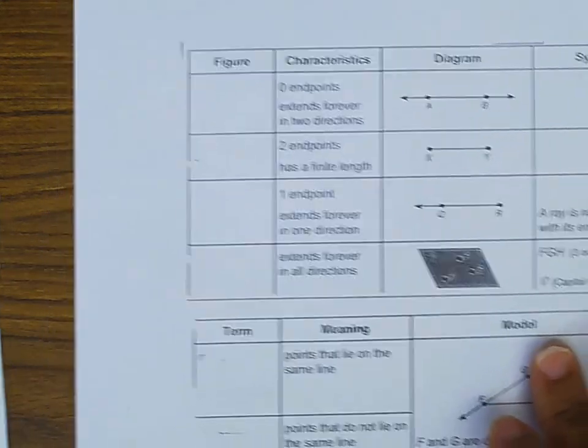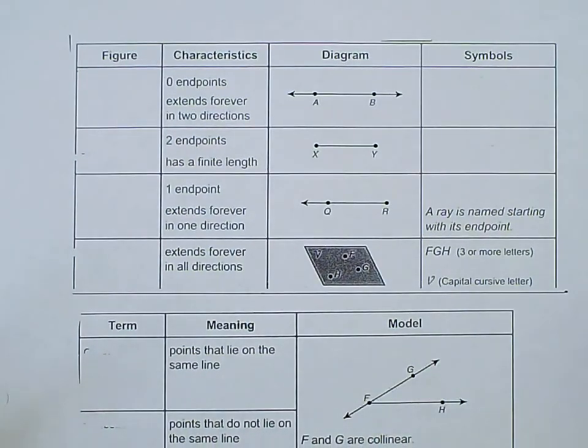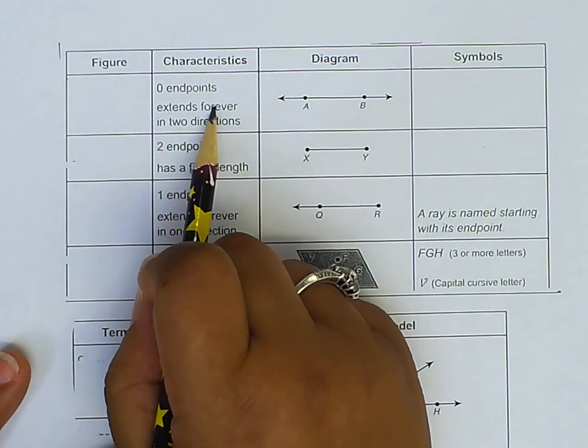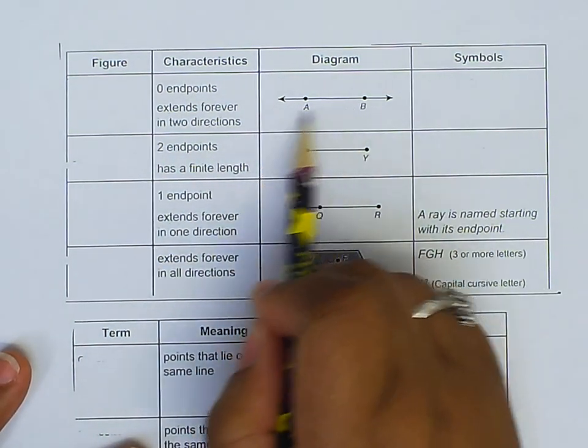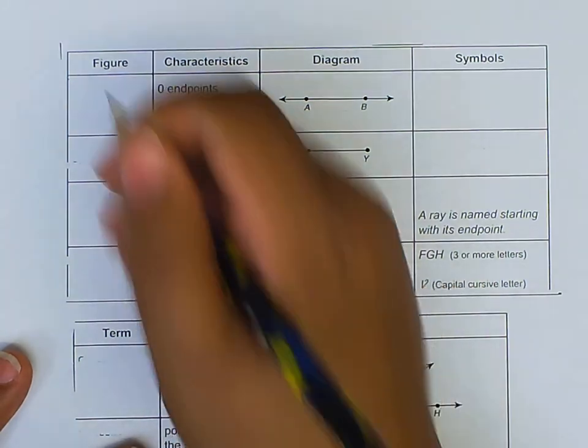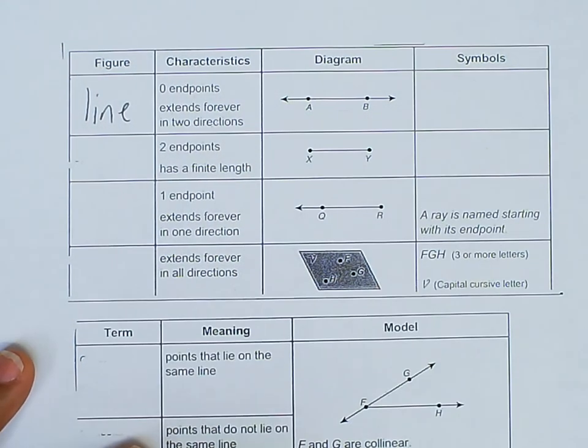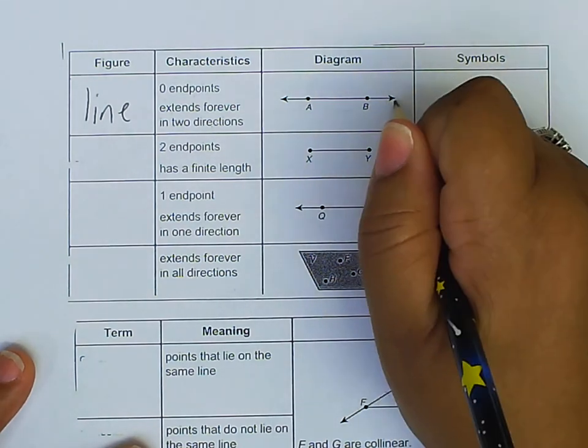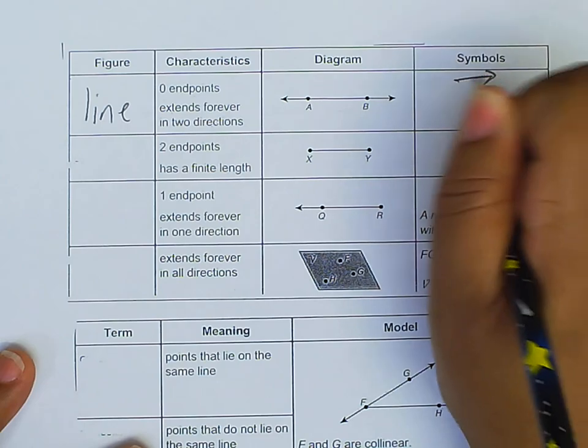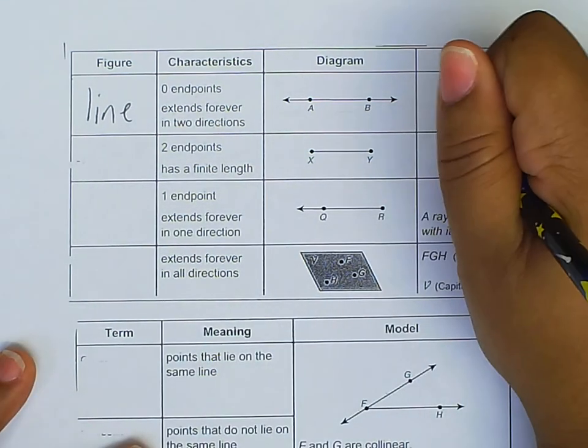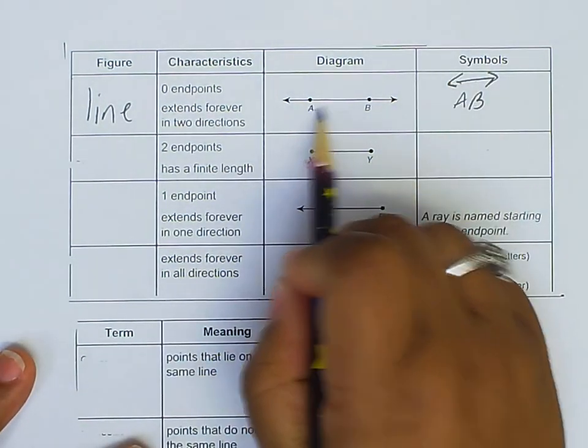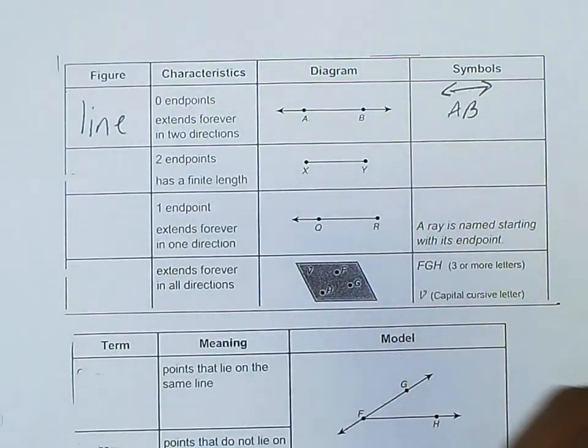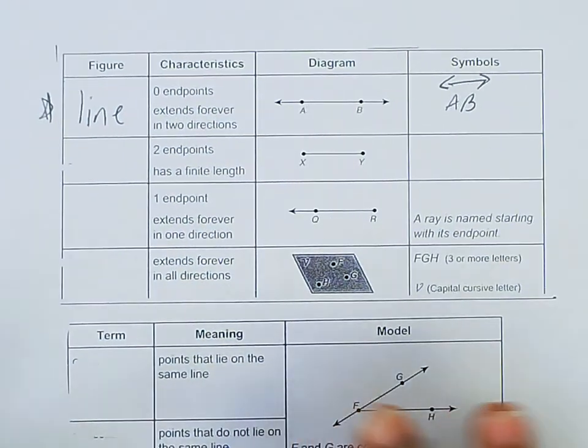So first thing here, let's set this up so we can see it better. This one here says zero endpoints, extends forever in two directions. So most of you guys can tell by looking at this, this would be a line. And then the symbol you always use for a line kind of looks like this right here. You put AB because you use the two points you see here. You can use any two points. So that's a line. I'm just going to star it because it's one of the words we had earlier.